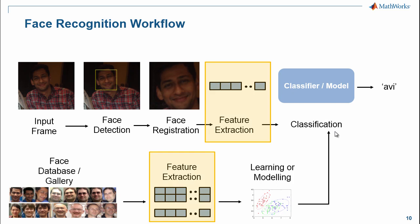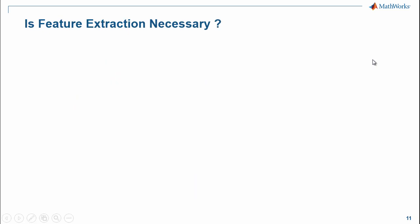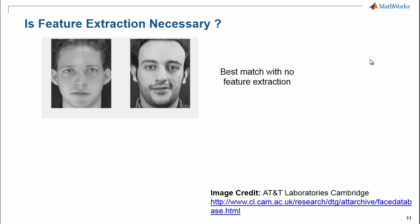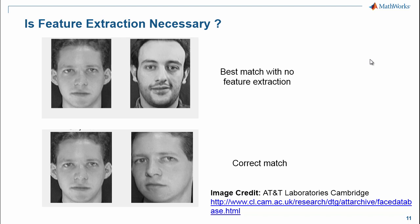I'm going to start with the feature extraction step because this is new to a lot of people interested in face recognition who haven't used computer vision or machine learning techniques before. One question I get asked is whether the feature extraction step is even necessary. To illustrate this, I have recognition results when I tried to recognize a person using a simple image difference metric and no feature extraction. As you can see, he has been mismatched because the raw pixel information does not have enough discriminative information to distinguish between the two faces. The image pair below shows the correct recognition results, using images from the AT&T database.